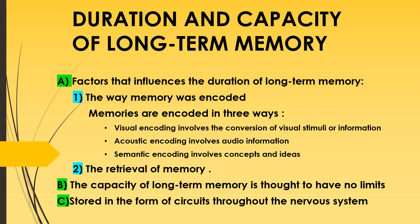Regarding the duration and capacity of long-term memory: scientists generally believe that the human brain can store an unlimited amount of information for a duration that may go beyond decades. The first factor influencing duration is the way a memory is encoded — optimally encoded memories last much longer than shallowly processed ones. Long-term memories are encoded in three ways: visual encoding (conversion of visual stimuli), acoustic encoding (audio information), and semantic encoding (concepts and ideas). The second factor is retrieval — the number of times a specific memory is accessed plays an important role in strengthening it.